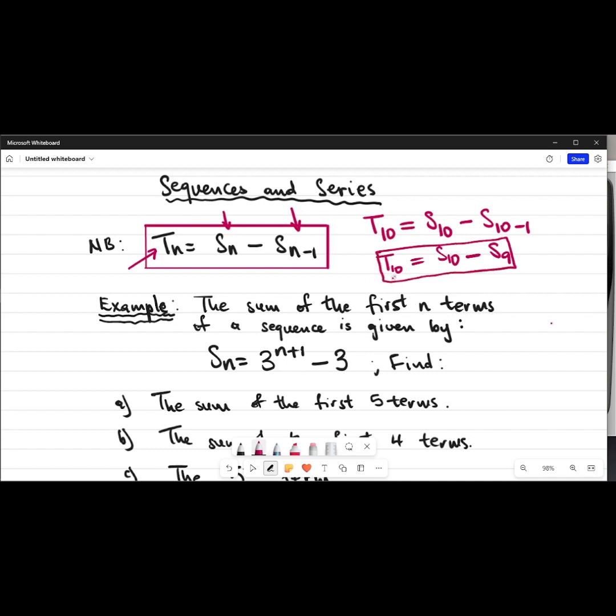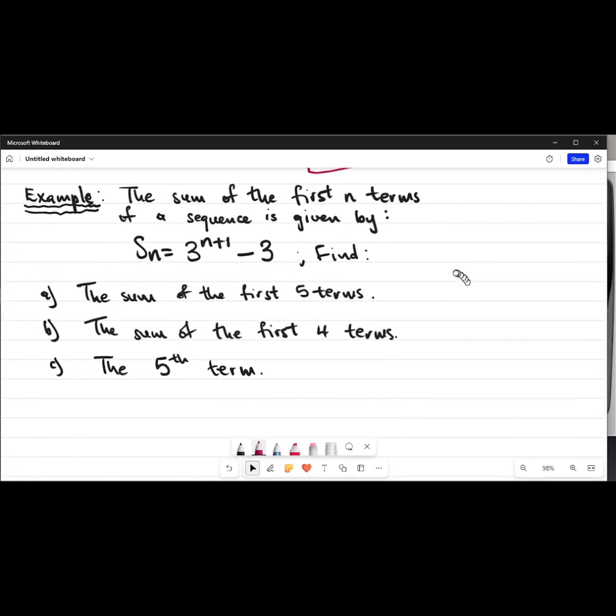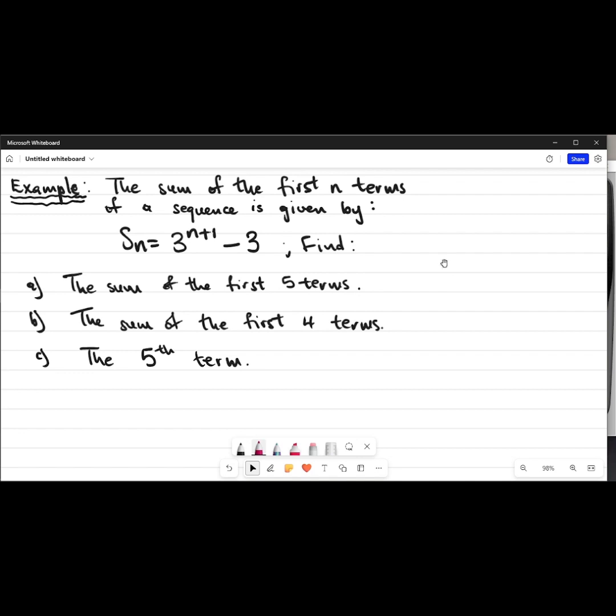The sum of the first n terms of the sequence is given by this formula here. So we have S_n = 3^(n+1) - 3. Right. Now the first question says find the sum of the first 5 terms.